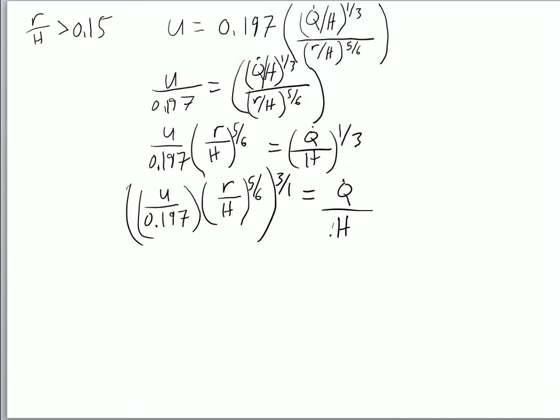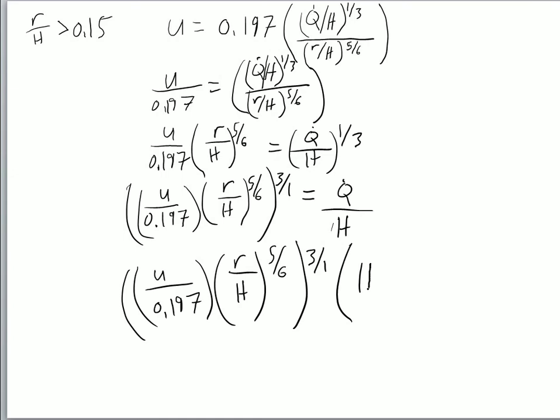All we need to do is multiply across by this h value, and we'll have this whole quantity—u divided by 0.197 multiplied by r over h to the five-sixths power, raised to the three over one—multiplied by h, equals the heat release rate.